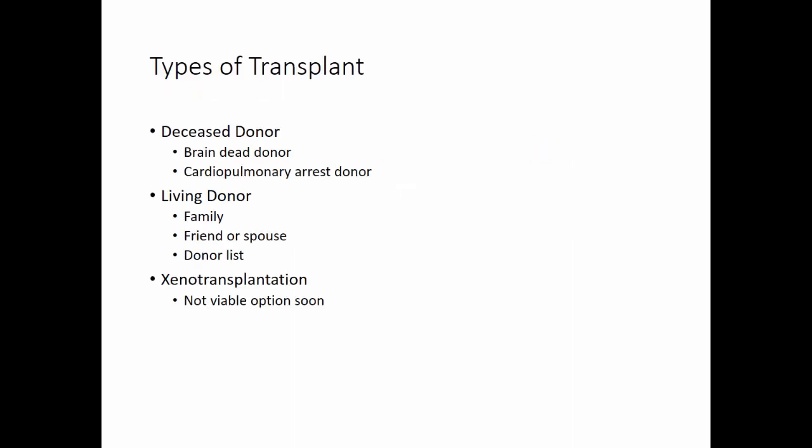The types of transplant could be from a deceased donor — for example, a brain-dead donor, or donation after cardiopulmonary arrest. Living donors from a family member, friend, or spouse, or from a donor list. Cell transplantation is actually a non-viable option that might become available soon.